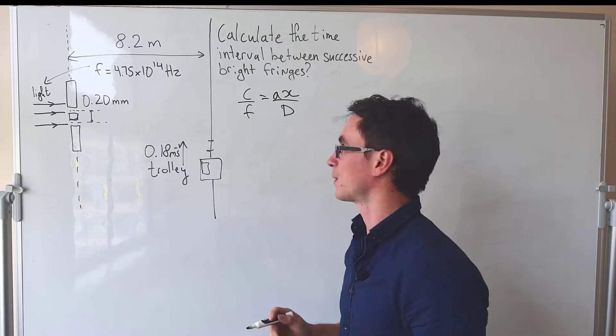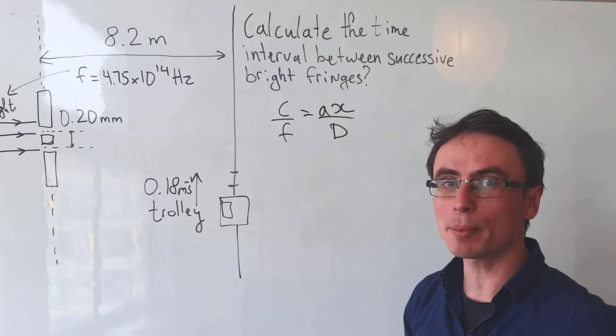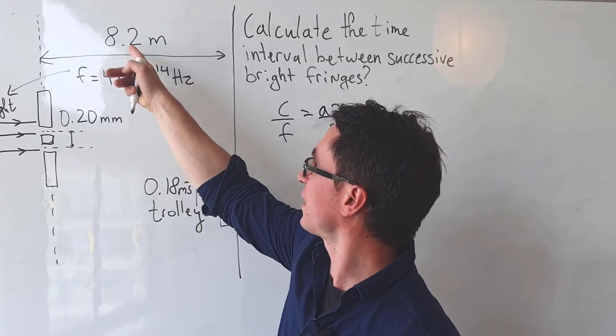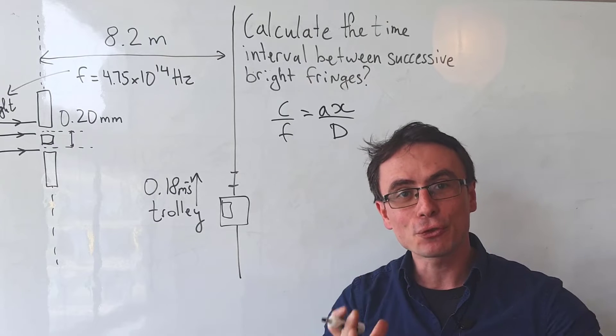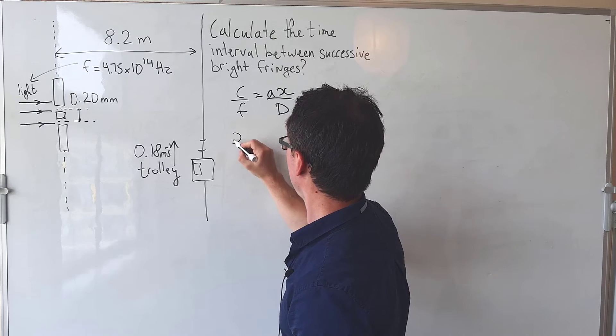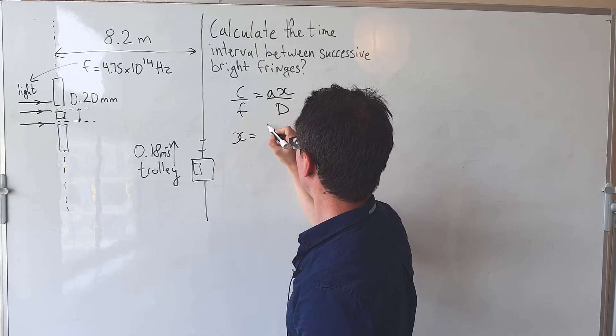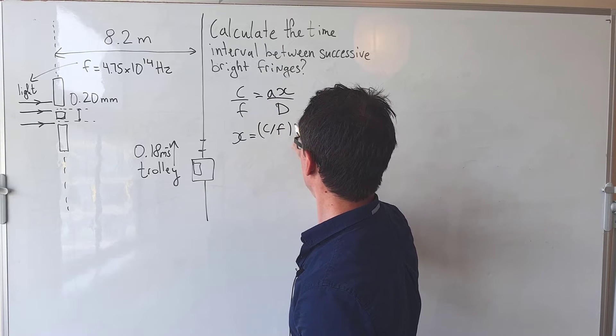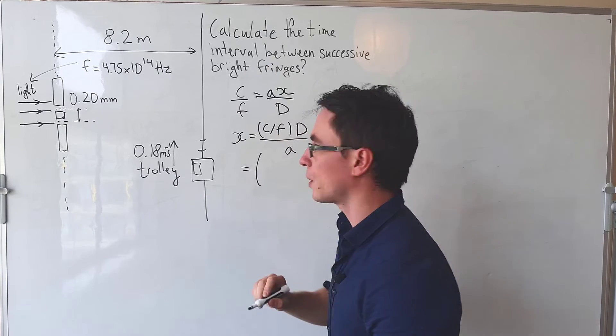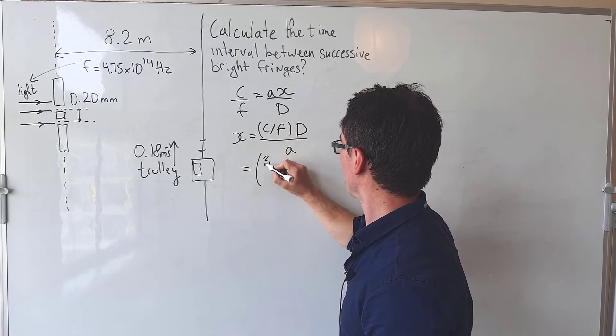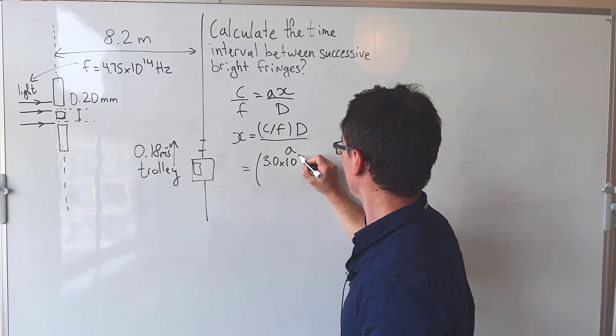In this case, a is the slit separation, d is this distance 8.2 meters, and x is the fringe separation. So x will just be equal to c over f multiplied by d divided by a, which in turn will be equal to the speed of light which is 3.0 times 10 to the 8 meters per second divided by the frequency which is 4.75 times 10 to the power of 14.